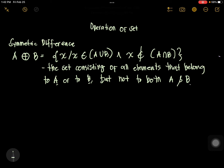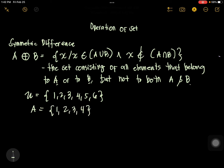So what does it mean? Let's have an example to further understand. Let's have the universal set as 1, 2, 3, 4, 5, 6. Our set A is 1, 2, 3, 4. And set B is 3, 4, 5, 6.